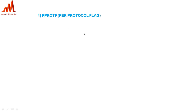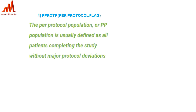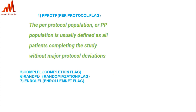The fourth flag is PPROTFL — the Per Protocol Population Flag. It is defined as all patients who completed the study without any major protocol violations. We reference the protocol deviation dataset, which lists subjects with major protocol deviations. Subjects who do not have a major protocol violation are included in the per protocol flag.